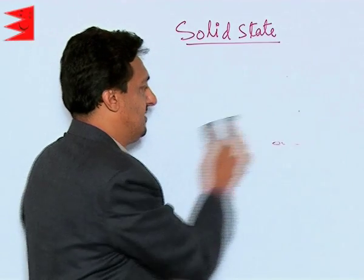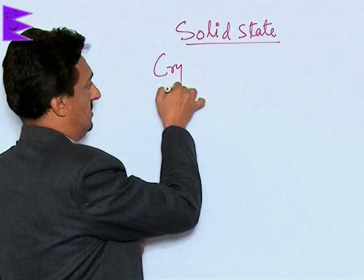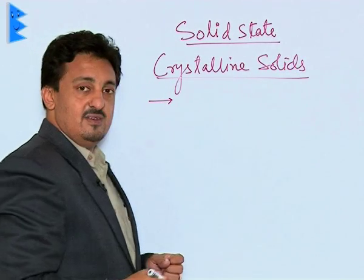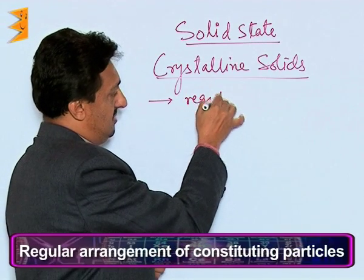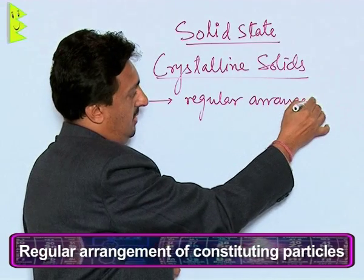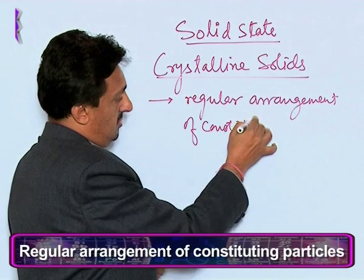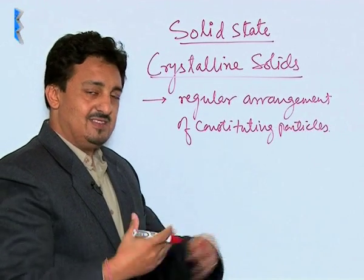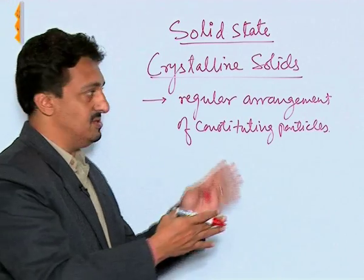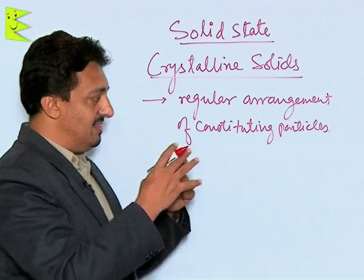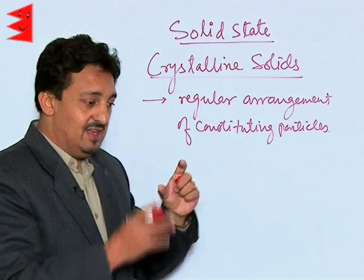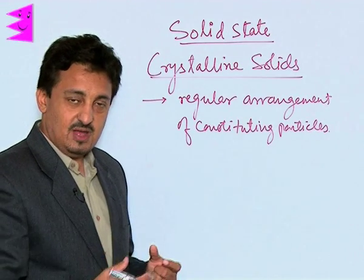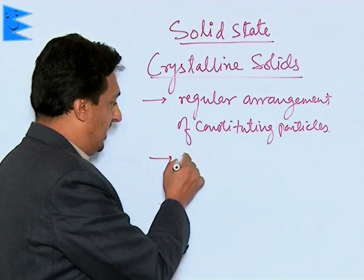Let us start with crystalline solids. Crystalline solids are the solids in which we have a regular arrangement of constituting particles. The particles — which can be atoms, molecules, or ions depending on the type of crystalline solid — are arranged in a definite pattern. This definite pattern is repeated in all three dimensions.